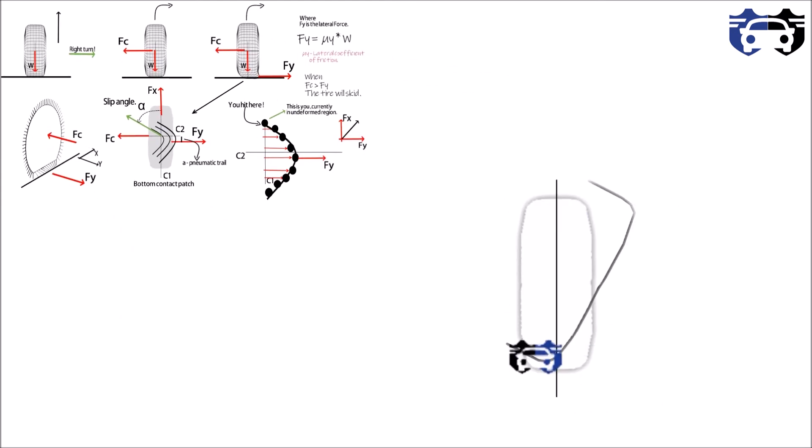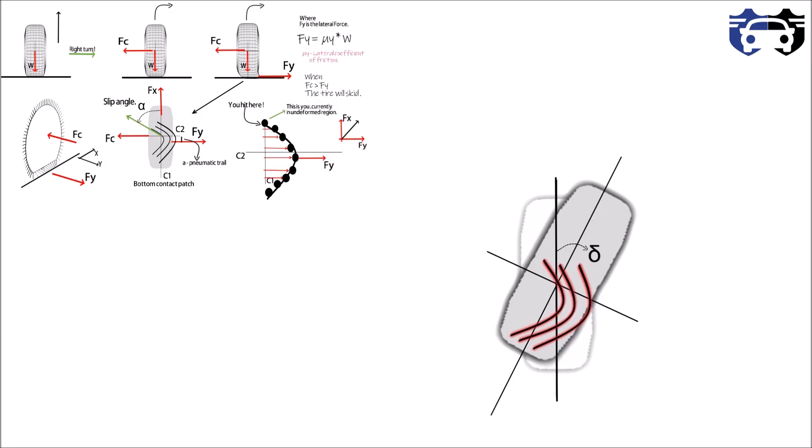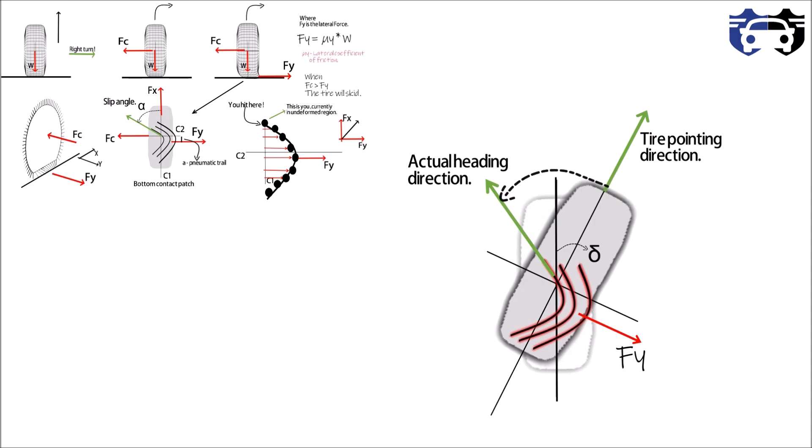Now this is your straight moving tire and for turning you give it a small steering angle delta. This will deform the contact patch and there will be a generation of lateral force. The tire actual heading direction is this and the tire is pointing in this direction. The angle between them is called the slip angle.